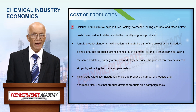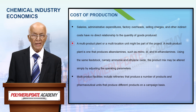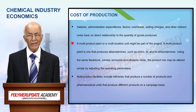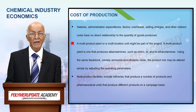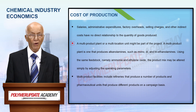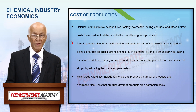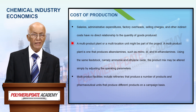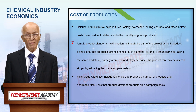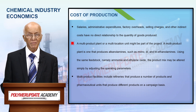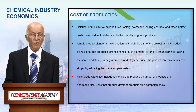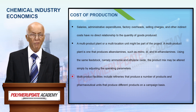Indirect costs have no direct relation to quantities of product produced. The project may be a multi-product plant or a multi-location unit. The manufacture of ethanol amines, namely mono-, di-, and triethanol amines, is an example of a multi-product plant — by just changing the operating conditions, the product mix can be varied using the same feedstock, namely ammonia and ethylene oxide. A refinery producing a variety of products, and pharmaceutical units producing different products on a campaign basis, are also examples of multi-product plants.